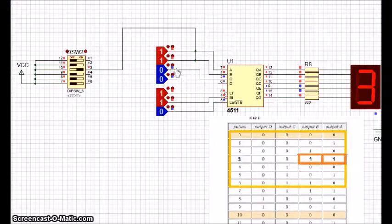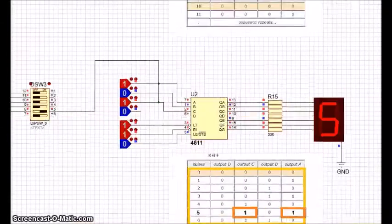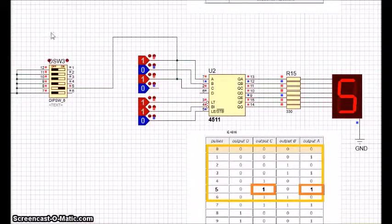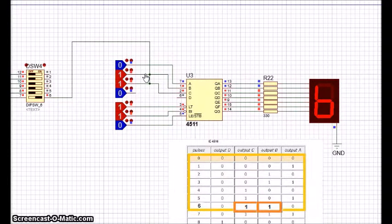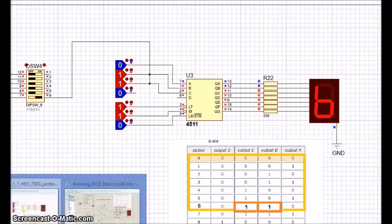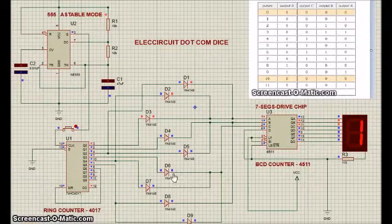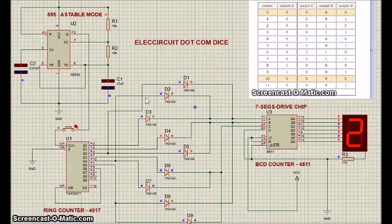For the number 5, activate ports A and C. For the number 6, activate the output ports B and C. Now just use diodes to prevent signal intersect, and ready, we have an electronic dice.